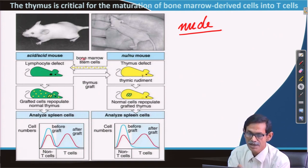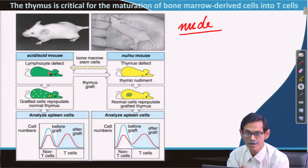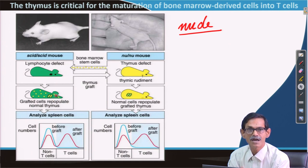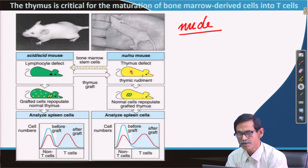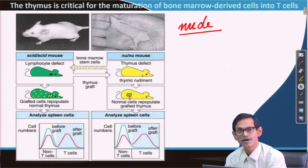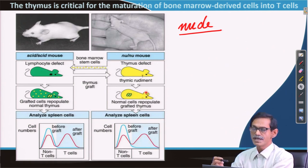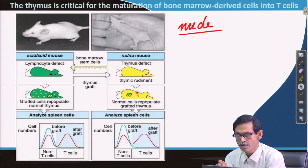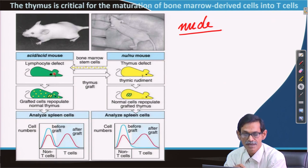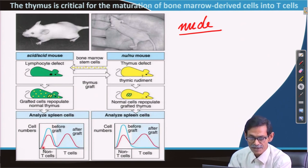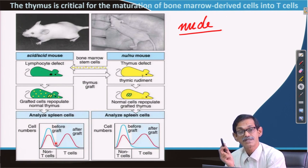If you take bone marrow from the nude mouse and inject it into the irradiated mouse, which has a thymus, T cells are made normally over time. This is measured by flow cytometric analysis: before transplantation the blue line shows no T cells (CD3-positive cells), which is flat; after bone marrow transplantation, the T cell population appears. This confirms that when the thymus is present, bone marrow-derived cells can mature into T cells.